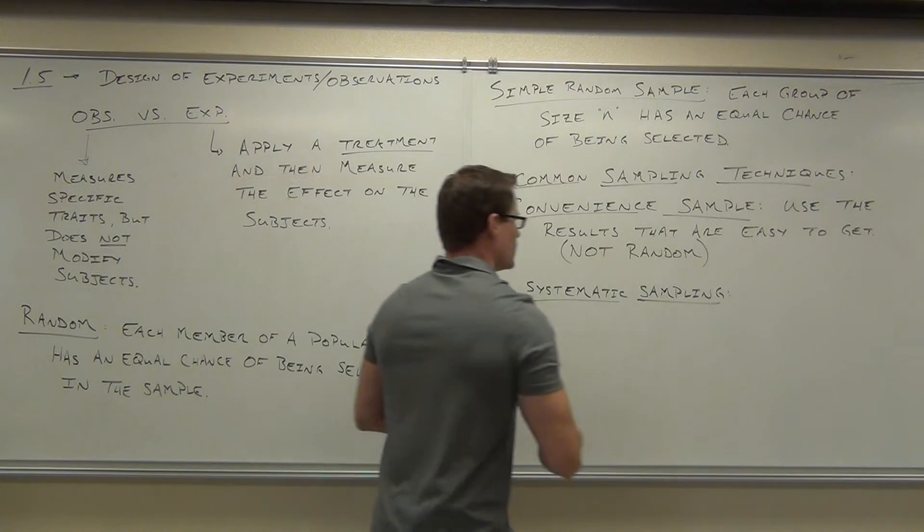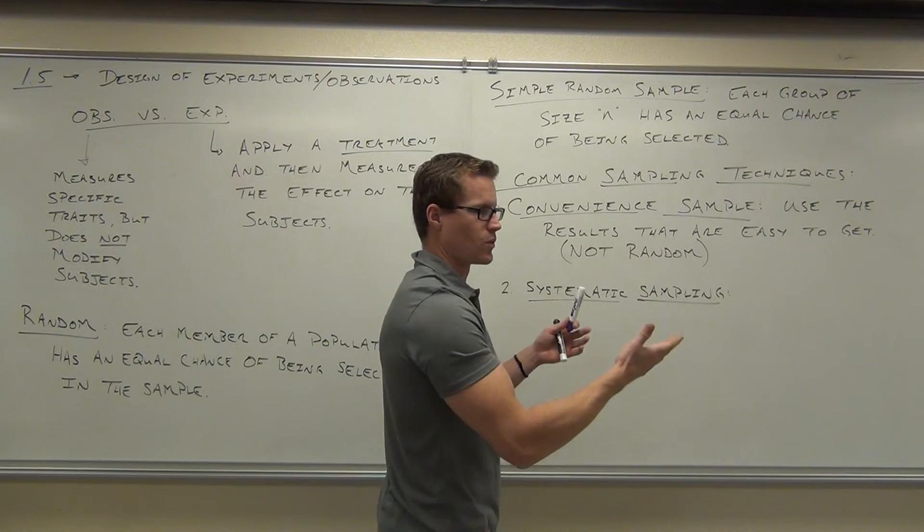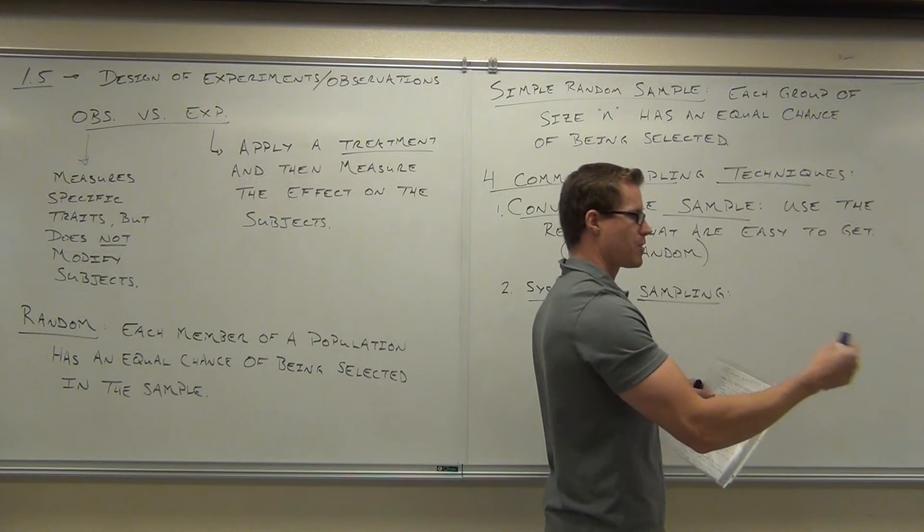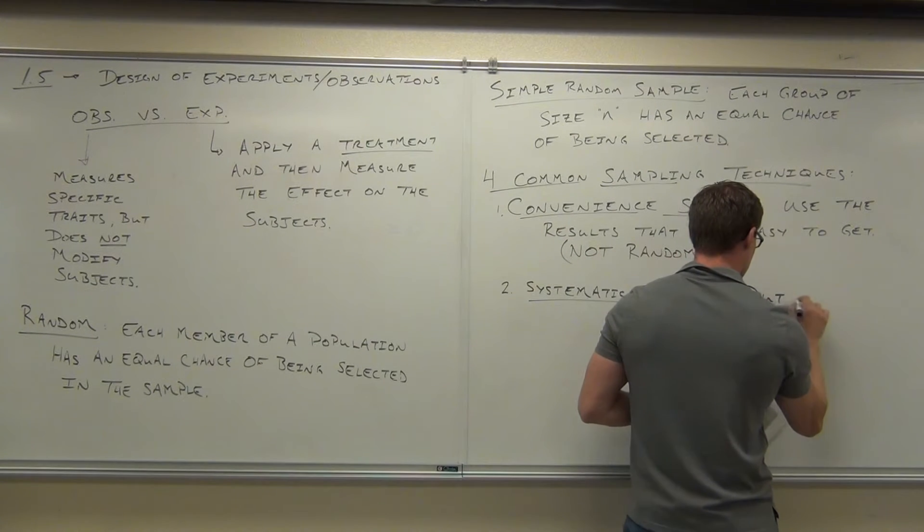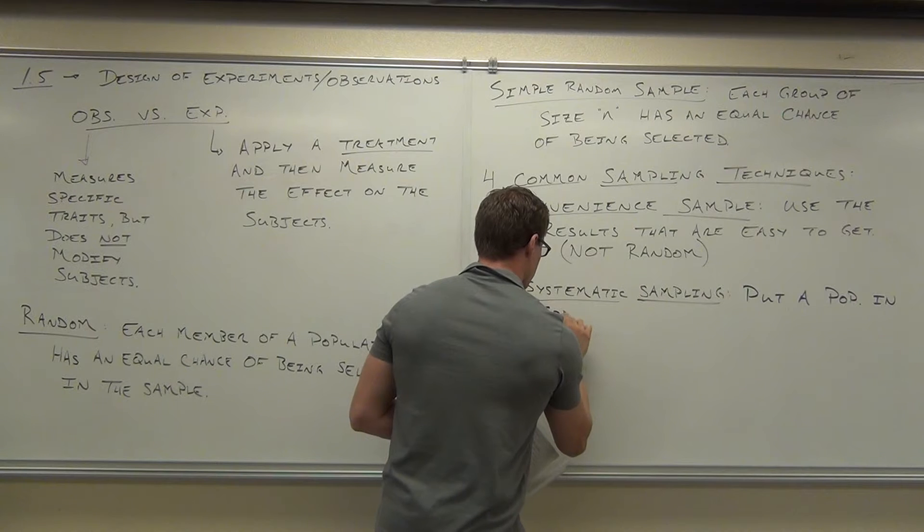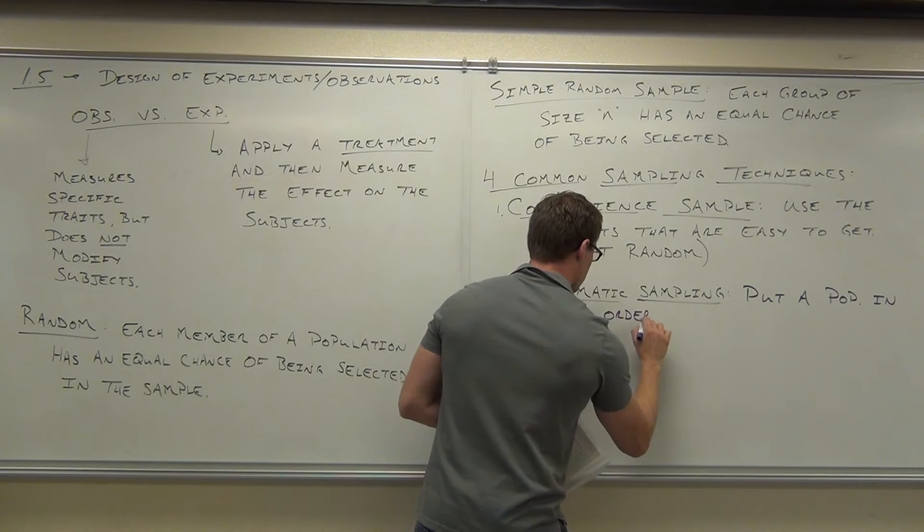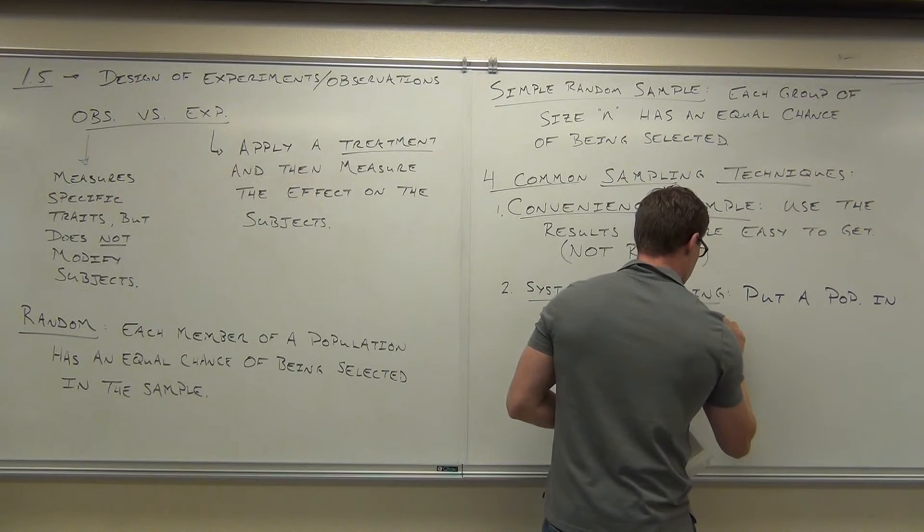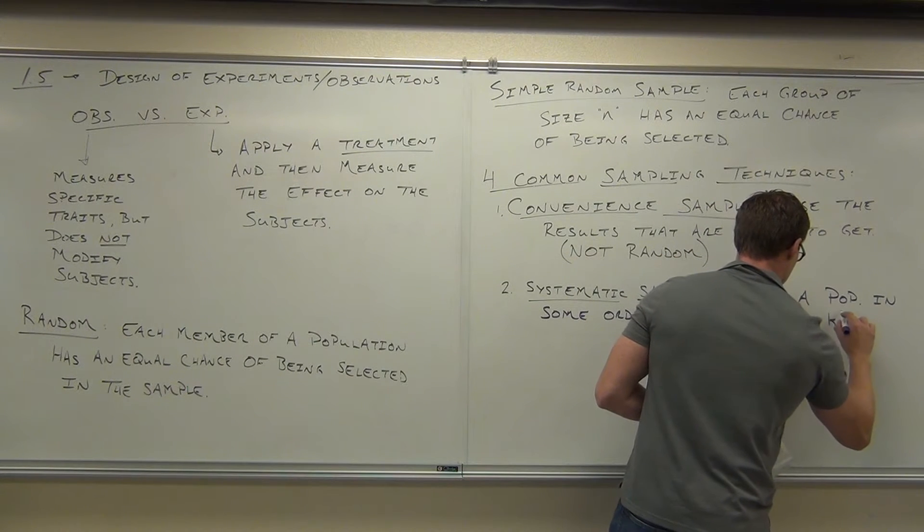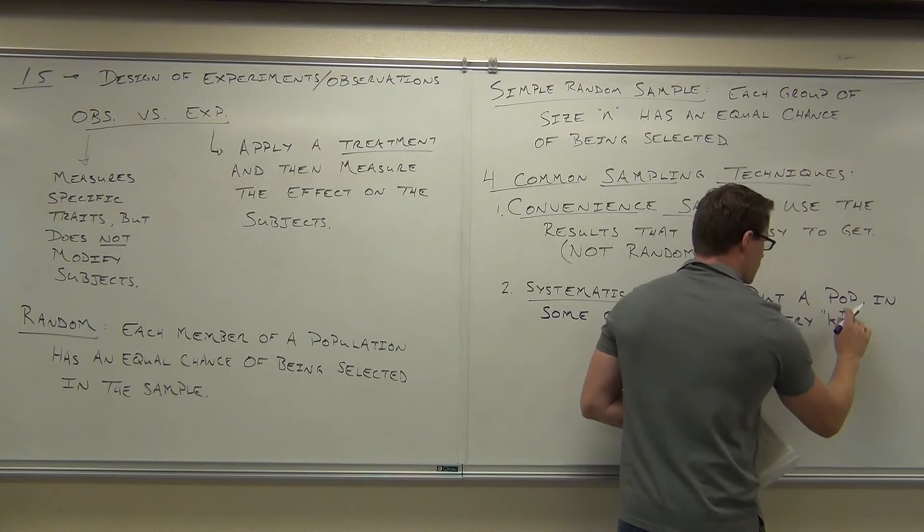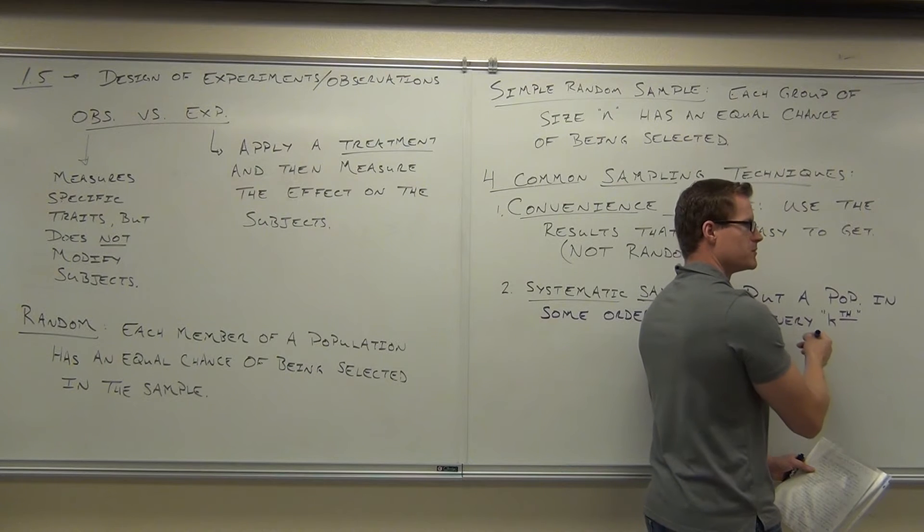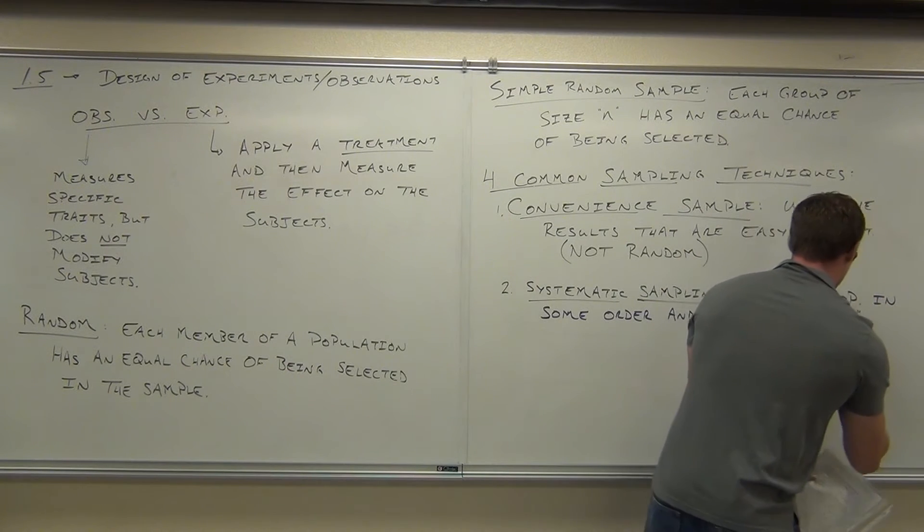So let me write this out for you again. You're going to put your population in some numerical order. So you're going to have, give every person a number, basically. So put a population in order and select every kth member. That's a kth, kth, like fifth, sixth, seventh, tenth, thirteenth. It wouldn't work for three, it would be a third, but in every kth member.